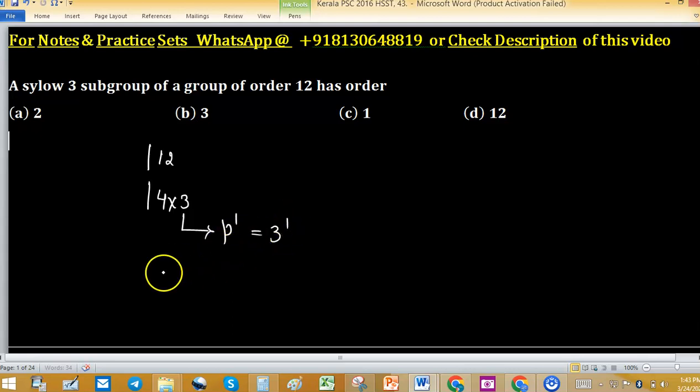Sylow's first theorem says a p-Sylow subgroup will exist of order p raised to the power n. What is the power of n in this problem? A 3-Sylow subgroup will exist having the order 3 raised to the power 1, which means 3.